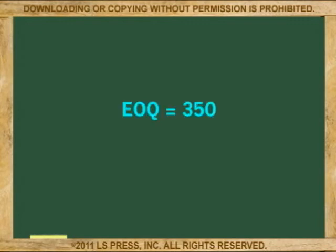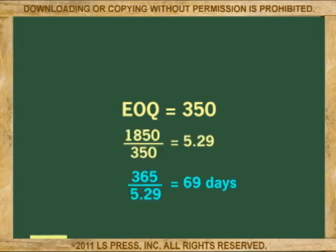The cheapest way to carry chocolate ice cream at this supermarket is to order 350 half gallons every time. By dividing the annual sales of 1,850 by 350, we see that we must order 5.29 times per year, or every 69 days.